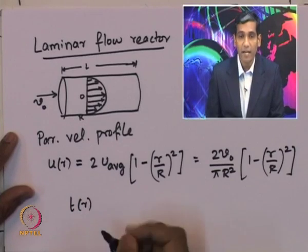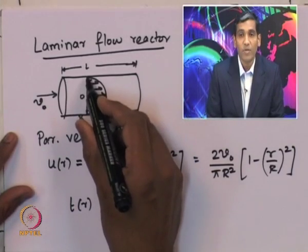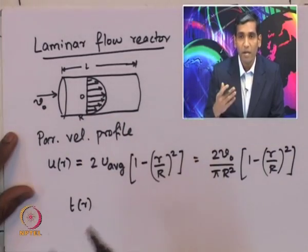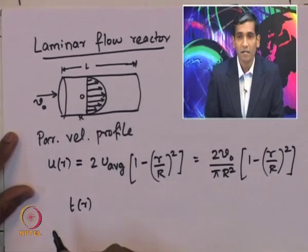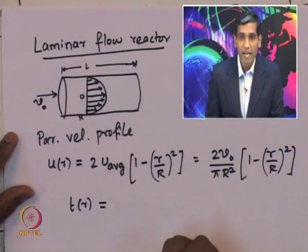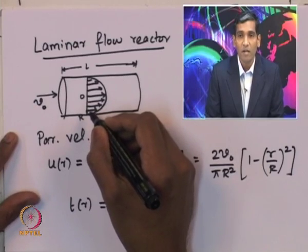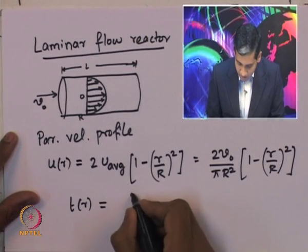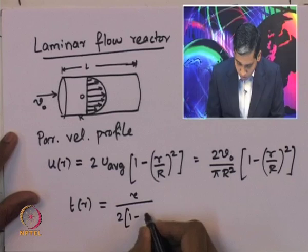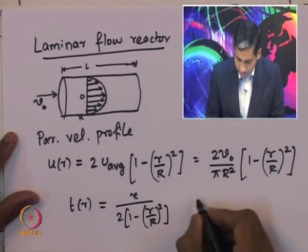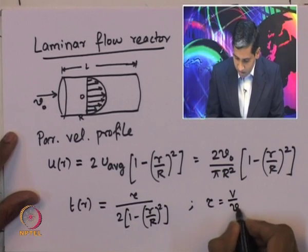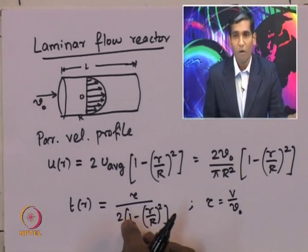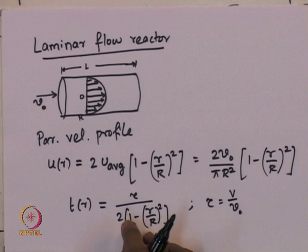The time taken by different fluid streams at different radial locations will be different because their velocities differ. The time for a fluid element at radial position r to traverse from entry to exit is t = τ/[2(1 - (r/R)²)], where τ is the space time of the reactor given by the reactor volume divided by the volumetric flow rate.